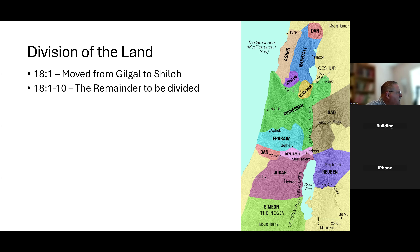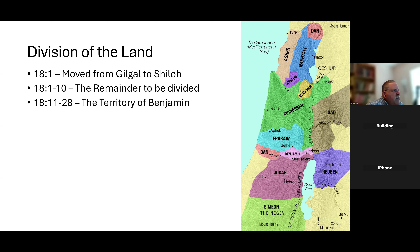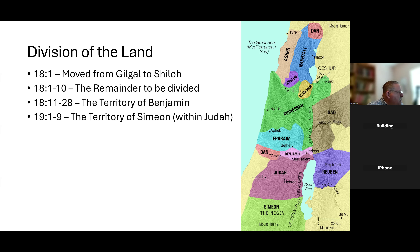The first ten verses of chapter 18 cover the remainder of the land that needs to be divided. Joshua sends some folks to survey the land to figure out where the best dividing lines are. Verses 11 through 28 give us the territory of Benjamin, which finishes chapter 18. These statements are very similar to what we've seen with the other tribes — talking about the cities and boundaries of the territory, which were important things to be written down.